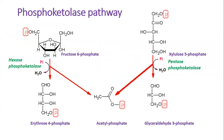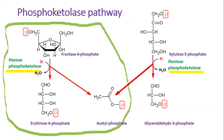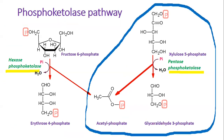The key enzymes are phosphoketolases, which split fructose-6-phosphate or xylulose-5-phosphate. Phosphoketolases are thiamine-dependent enzymes, and the reactions also require inorganic phosphate. Fructose-6-phosphate is cleaved into erythrose-4-phosphate and acetyl phosphate, while xylulose-5-phosphate is converted to glyceraldehyde-3-phosphate and acetyl phosphate.